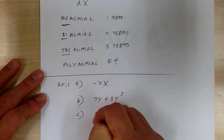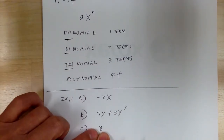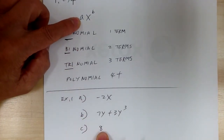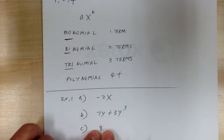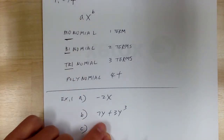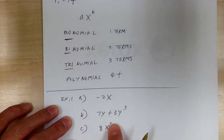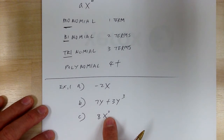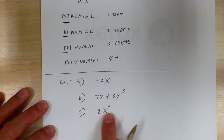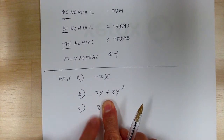C is 8. This fits the format too, because A is 8 and you have X to the zero power — that's why you don't see the variable. So this is still a monomial because it still fits this pattern. Zero power is 1, that's why you don't see it. So when you see just a number, that is a monomial.